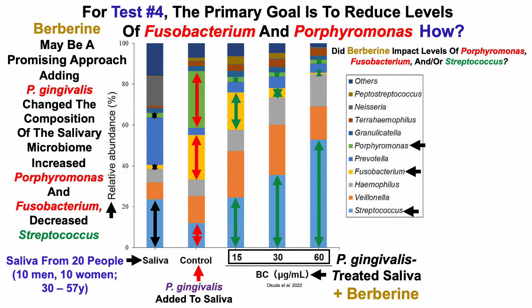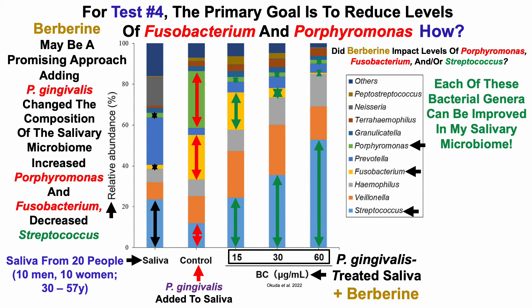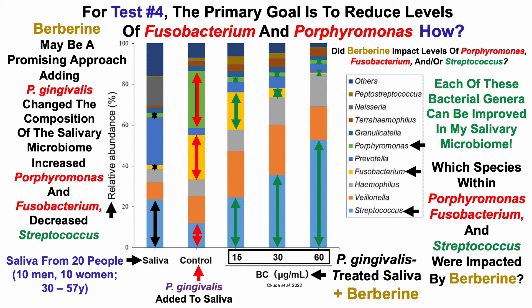The last bit of good news is an expansion of Streptococcus. At the highest level of berberine added to the P. gingivalis-spiked saliva, Streptococcus went up a lot — even higher than where it was in the original saliva. Note that each of these bacterial genera can be improved in my salivary microbiome. However, these are genus-level data. We need to know if the species that berberine impacts overlap with my bacterial species, and if they do, that may indicate a positive role for berberine on my salivary microbiome.